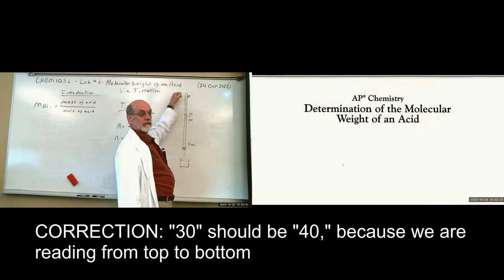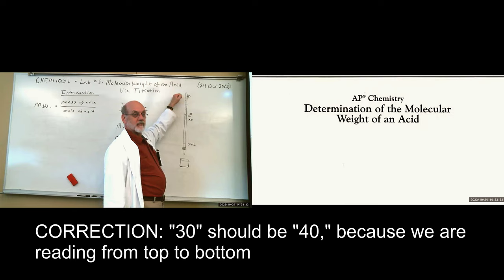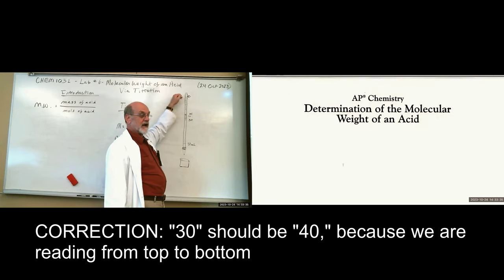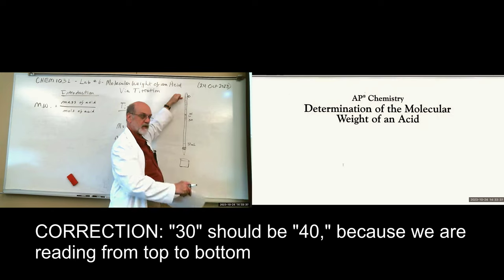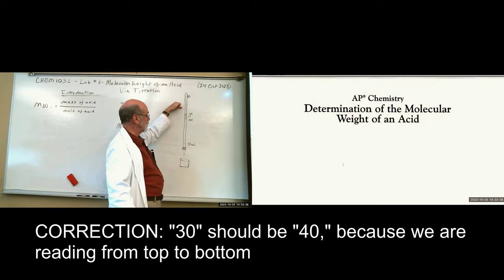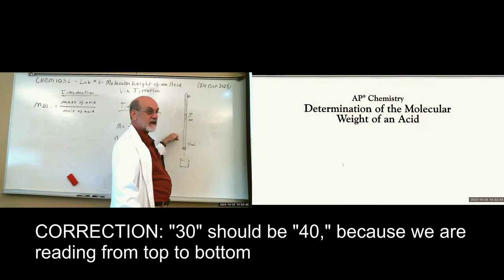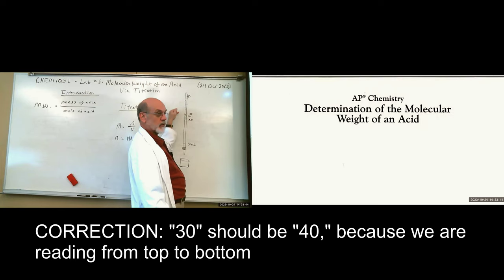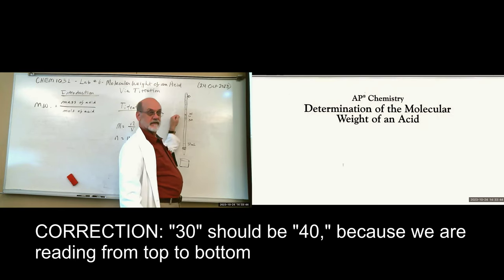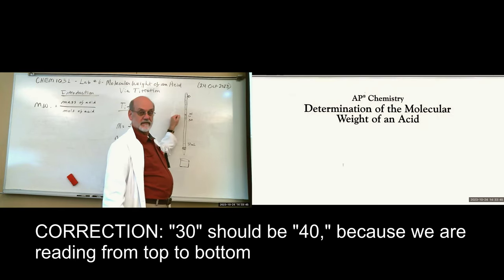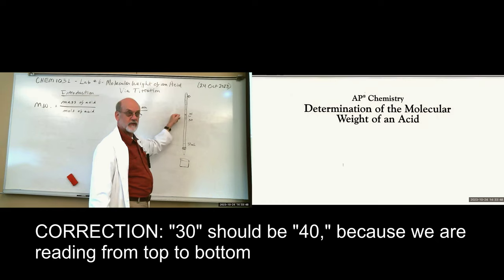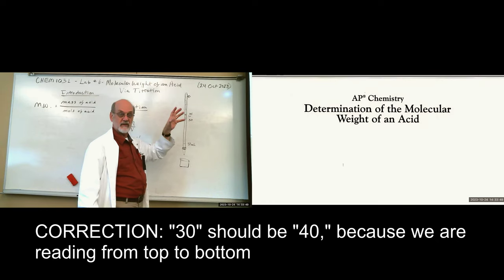What if you don't start at zero? If you do triplicate titrations, you titrate one beaker, then another, then another. All you need is where you started and where you ended — the final minus the initial will give you the volume that you delivered.